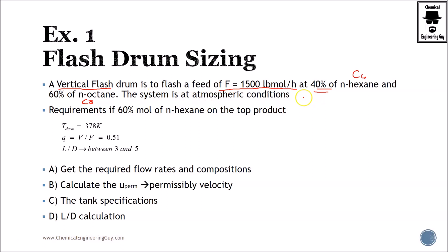The system is at atmospheric conditions, and the requirement is that 60% of the distillate must be hexane. So this is already YD, the distillate will be 0.6. We got the inlet which is 0.4. We don't have the bottom, so that will be useful to get. These are the conditions: temperature of 378 Kelvin, and the vapor quality, which we know is vapor divided by feed, 0.51.